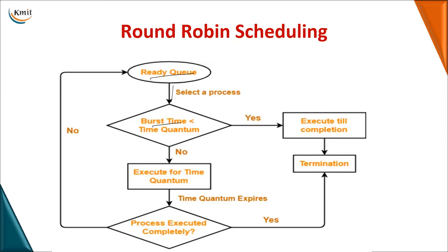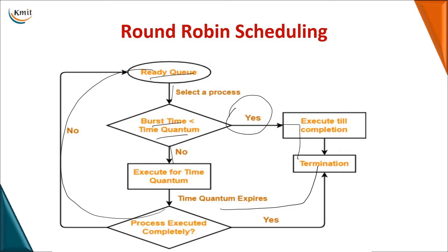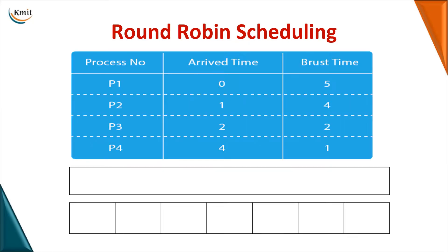If the burst time — the actual time required for execution — is less than the time quantum, the process goes for execution and leads to termination. But if the burst time is more than the time quantum, after the time quantum expires the process moves back to the ready queue, and this continues until it completes and finally moves to the termination stage.